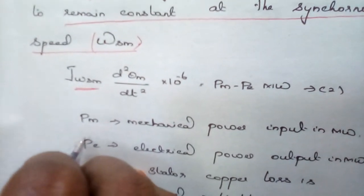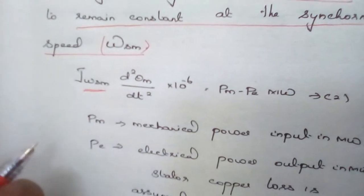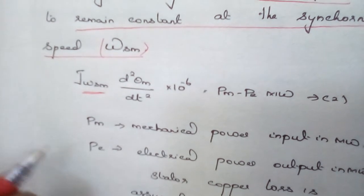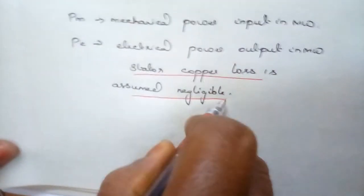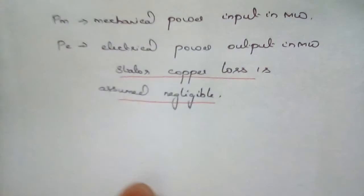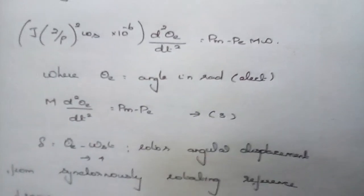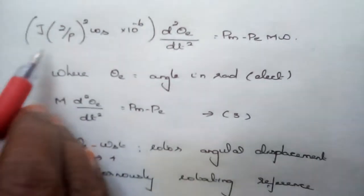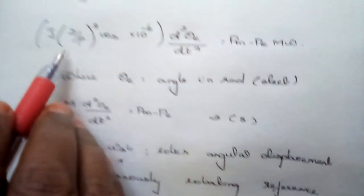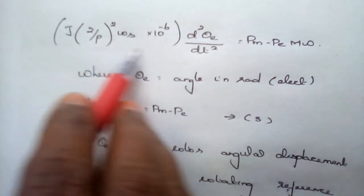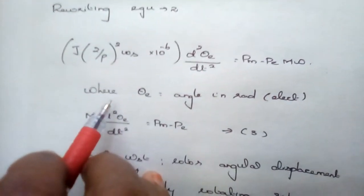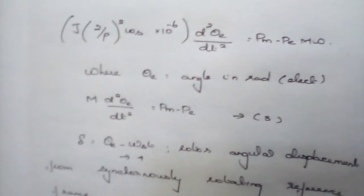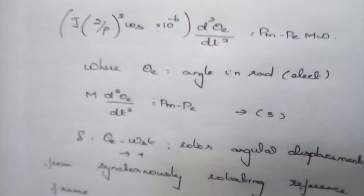Here, Pm is equal to the mechanical power input in megawatts, and Pe is the electrical power output in megawatts — this is considered under the assumption that stator copper losses are negligible. From this expression, equation 2 is rewritten in terms of the electrical equivalent. One mechanical degree is equal to 2/P electrical degrees, so we are converting the mechanical equivalent into the electrical case.